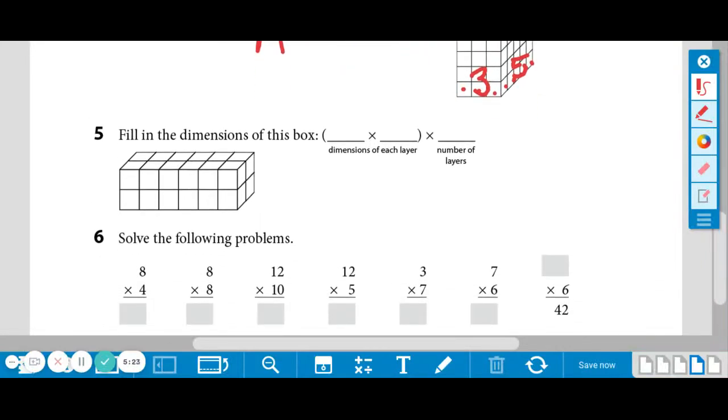Moving on. Number five says fill in the dimensions of this box. So in parentheses, it wants us to write the dimensions of each layer. And outside of parentheses, it's the number of layers. So let's count. We have 1, 2, 3, 4, 5, 6 by 1, 2.